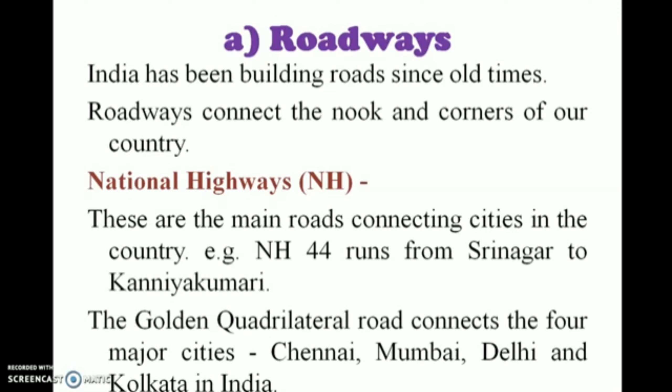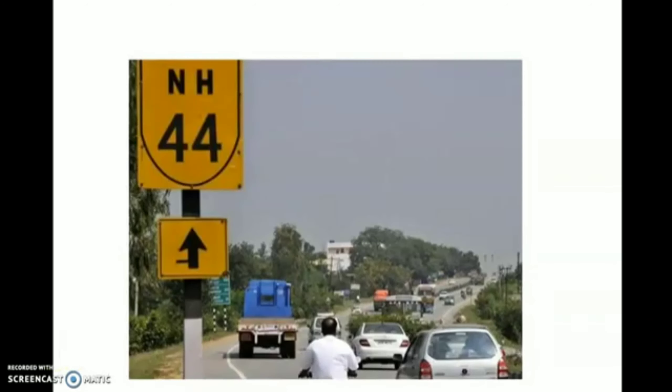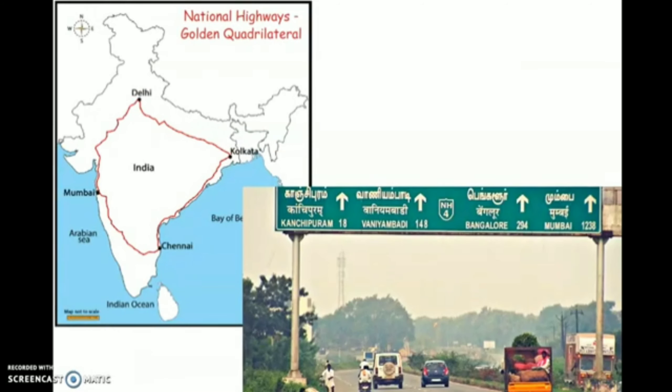National highways are the main roads connecting cities in the country. For example, NH44 runs from Srinagar to Kanyakumari. The Golden Quadrilateral Road connects the 4 major cities — Chennai, Mumbai, Delhi and Kolkata — in India.